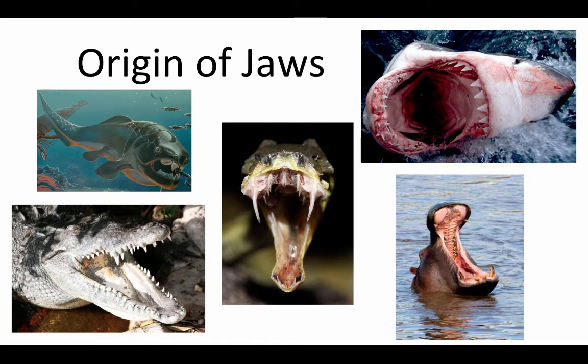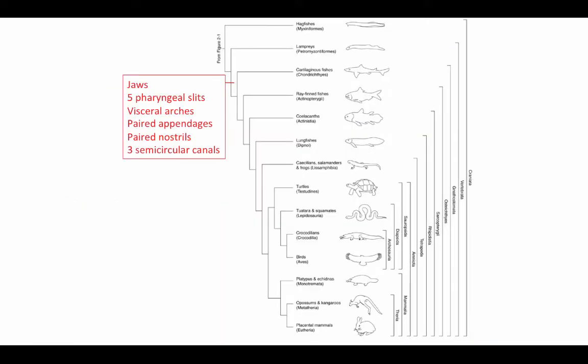So the first really major transition in the evolution of vertebrates was the origin of jaws. We'll go into great detail on how these jaws evolved and what parts they evolved from in their jawless precursors. But obviously, having these muscular, tooth-bearing jaws made them much more effective predators, allowing them to consume larger and larger prey organisms. This made them really the most dangerous predators in the early oceans. The group of vertebrates that possess jaws are known as gnathostomes.